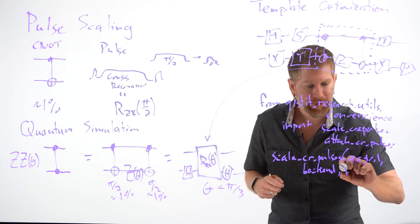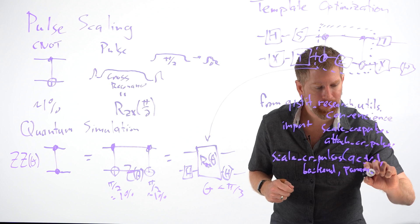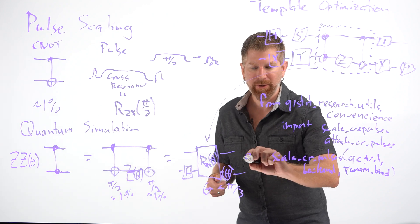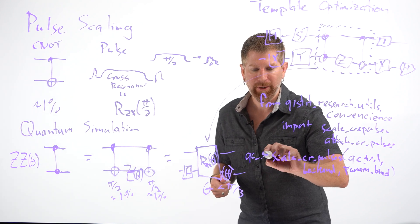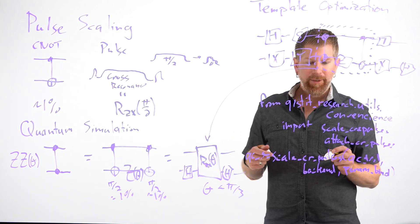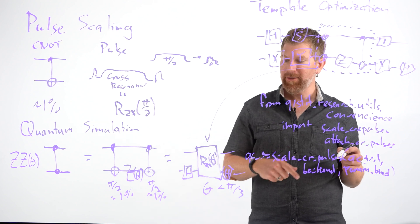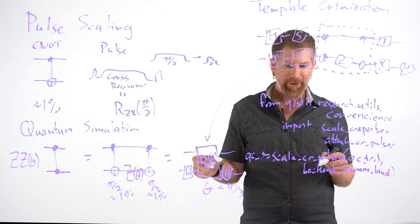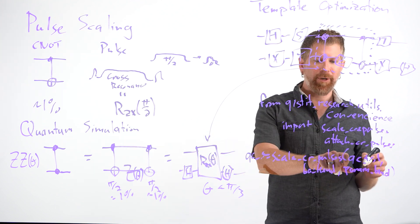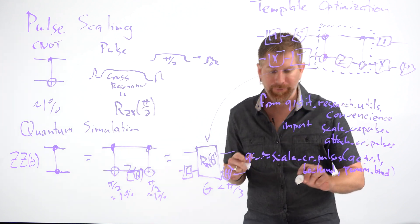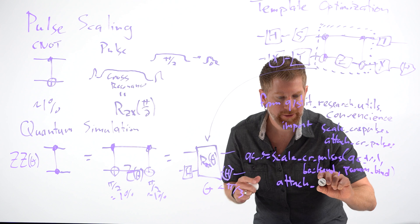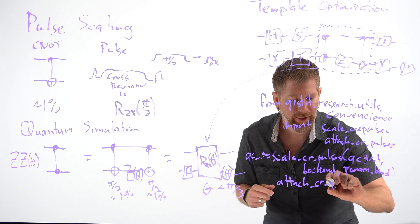And then if we have any parameters at the time, we can put those in, but we can also put those in later. So this will give you your scaled quantum circuit. Now if you're doing a single trotter step, for example, you may wish to do this without binding the parameters and then attach all the trotter steps together. So if you don't want to put the parameters in at this level, you can use the attached CR pulses later because this will work with parameters.